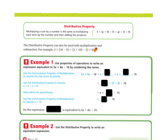The distributive property can also be used with multiplication and subtraction. For example, 2 times (10 minus h) is the same as 2 times 10 minus 2 times h — you distribute and then subtract the two products.